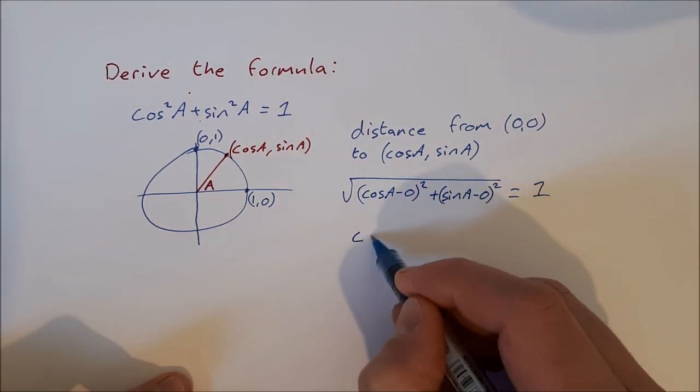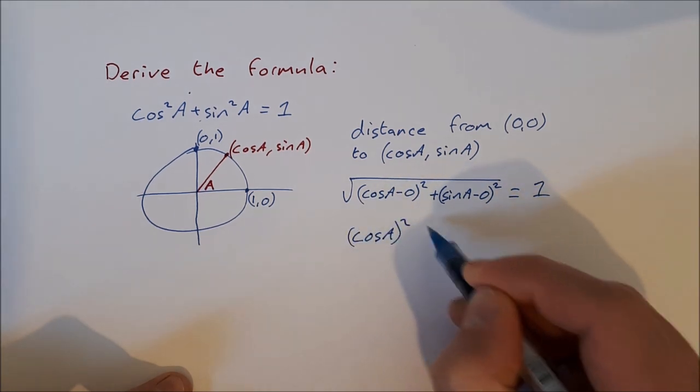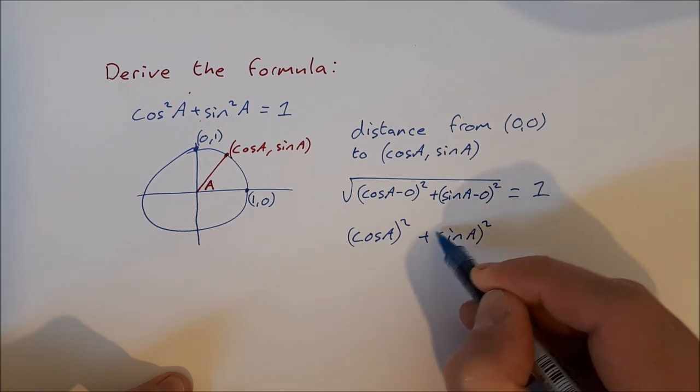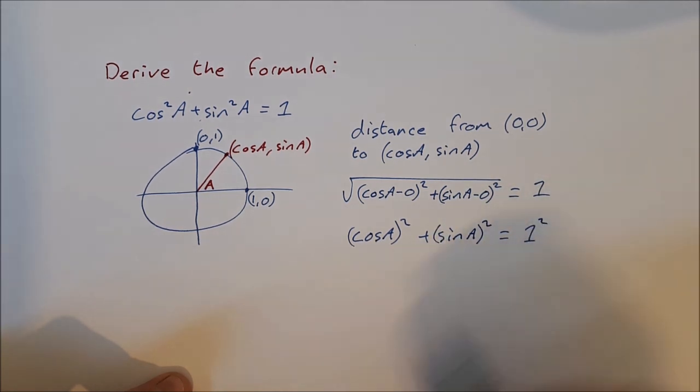So that leaves me with (cos a)² + (sin a)² = 1².